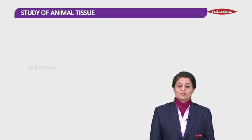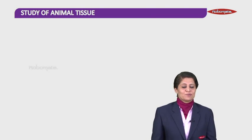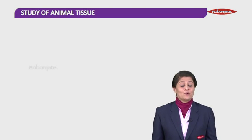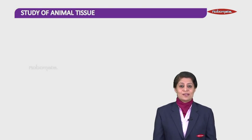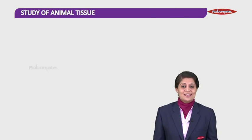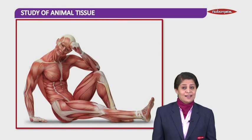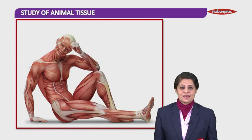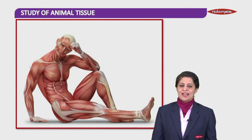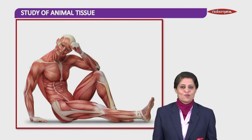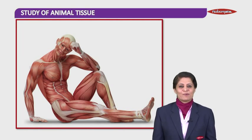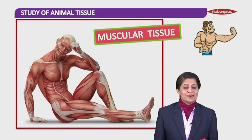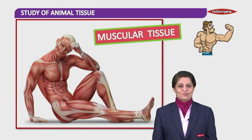Hello students, today we are going to be learning about — let me see if you can guess what we are going to be learning about by just seeing this picture. In this picture, which is the most abundant tissue you get to see? Muscles. So we are going to be learning about muscular tissue today.